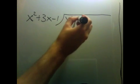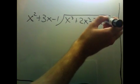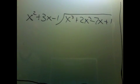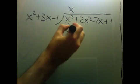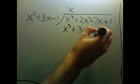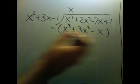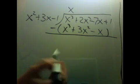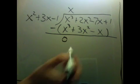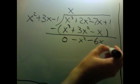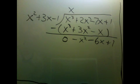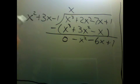Let's take the example I wrote down: divide x squared plus 3x minus 1 into x cubed plus 2x squared minus 7x plus 1. I want to knock off the highest term, so I multiply by x, giving x cubed plus 3x squared minus x. I subtract that from what I have: 0, then 2x squared minus 3x squared gives negative x squared, negative 7x plus x gives minus 6x, and then plus 1. To knock off the negative x squared term, I need to multiply by negative 1.